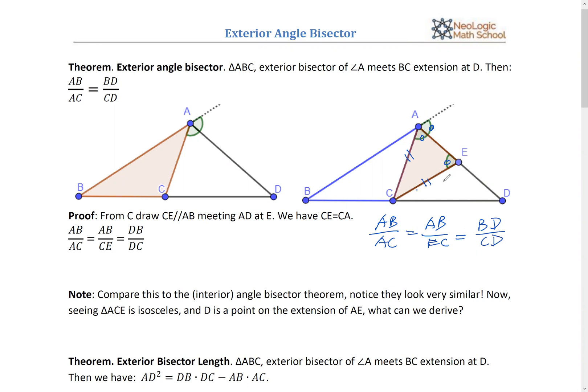But then AB divides EC equals BD divides CD. Because this triangle is similar to the larger one. Why? Because CE is parallel to AB, right? And that's it. This is the ratio we want to prove. No? And well, just by drawing a parallel line, we can handle that.